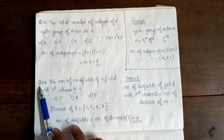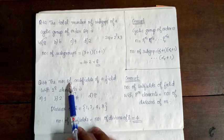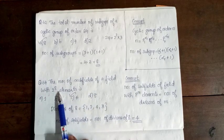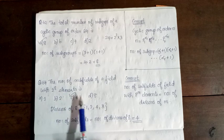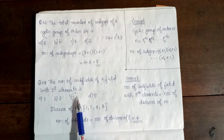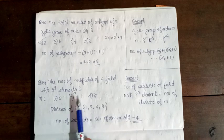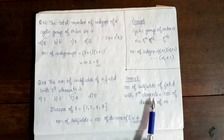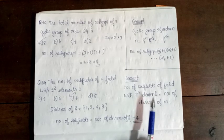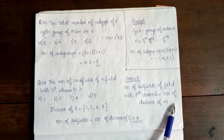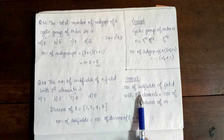The next question is 64: The number of subfields of a field with 2^8 elements. For a field with p^m elements, the number of subfields equals the number of divisors of m.